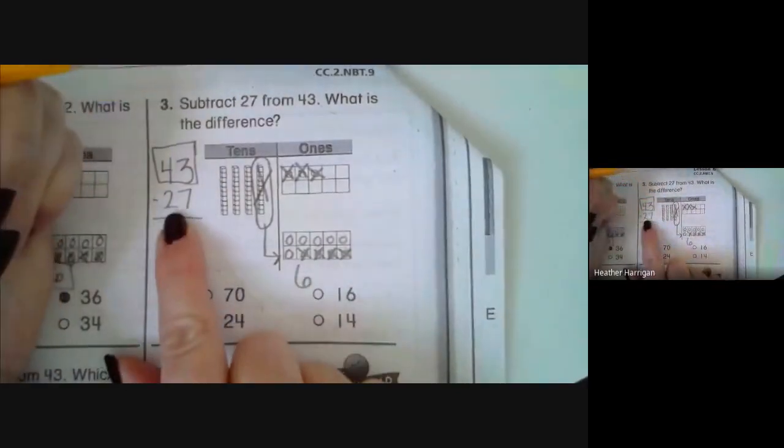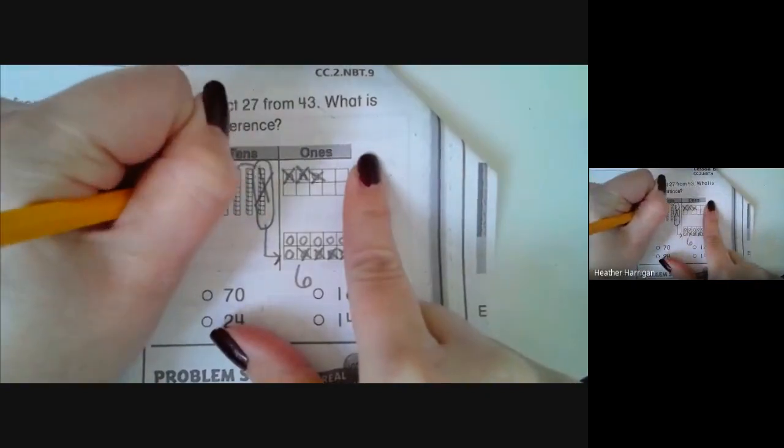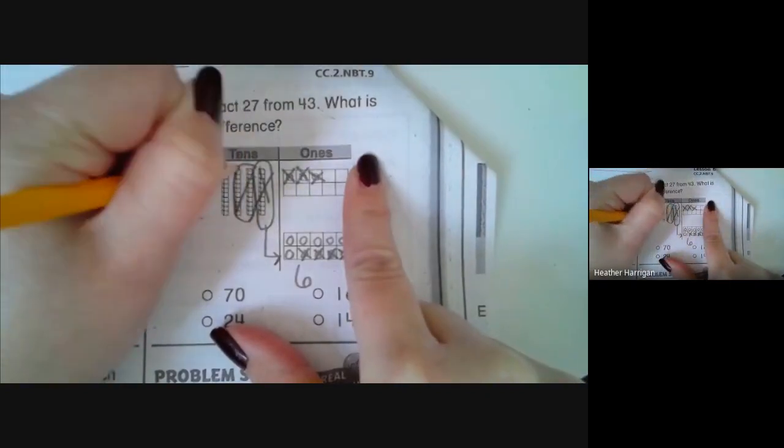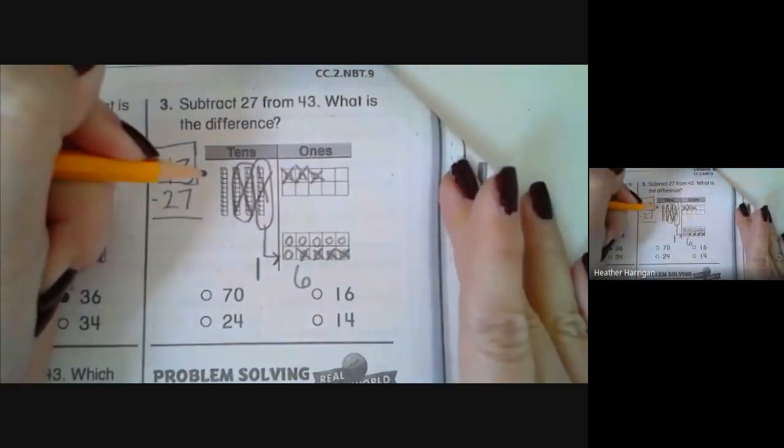And then we look at our tens place, which is subtracting two more tens. So we circle two tens, put an X, and we have one ten left. And that gives us the number 16.